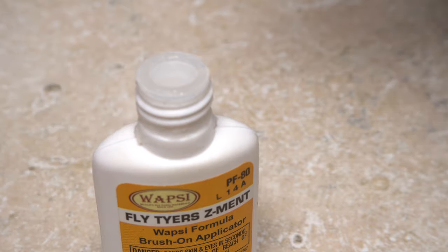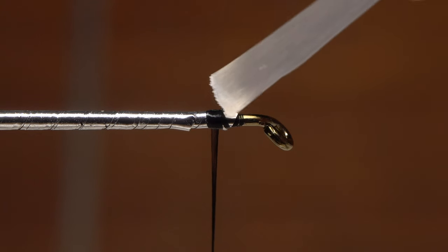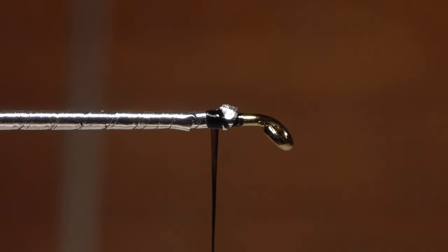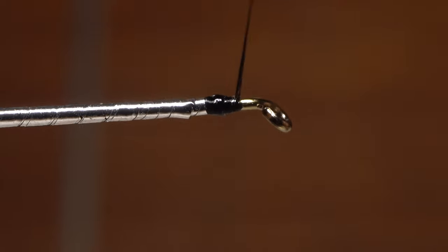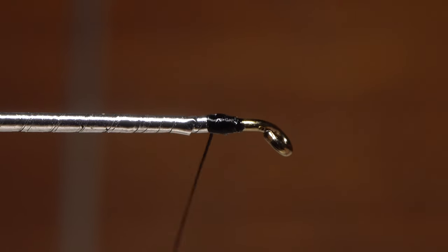Superglue, or here, Fly Tire Zement, applied sparingly to the thread wraps and Mylar ends will help to ensure they don't come unraveled. Think of it like hitting the save button on your computer. End with your tying thread at the initial tie-in point.